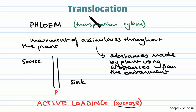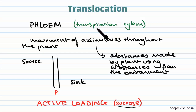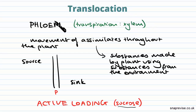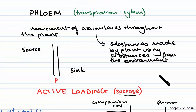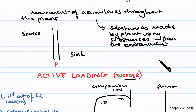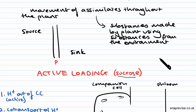It's important not to get translocation and transpiration mixed up. Transpiration occurs in the xylem, whereas translocation obviously occurs in the phloem. We'll go through some other differences at the end.